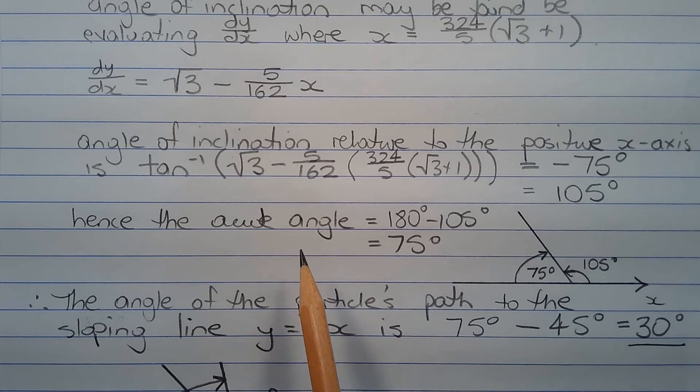Hence, the acute angle is equal to 180 degrees minus 105 degrees, which equals 75 degrees. Or the angle measured from the negative x axis clockwise.